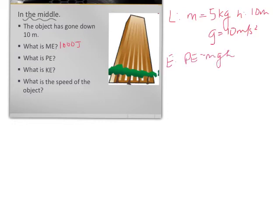Since these are our knowns, the most logical energy to find first is PE. So, PE equals MGH, or PE is equal to five times 10 times 10, or PE equals 500 joules.